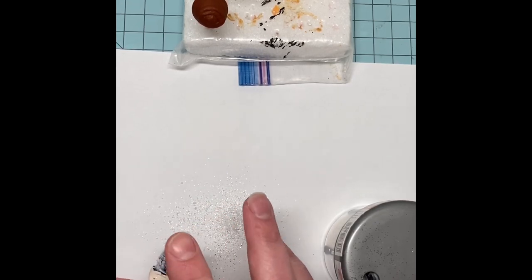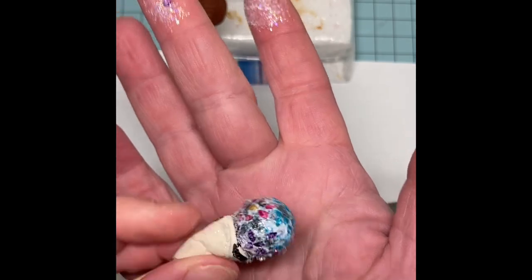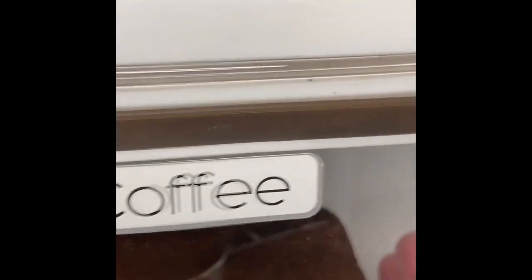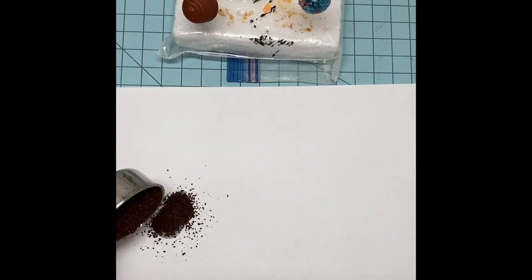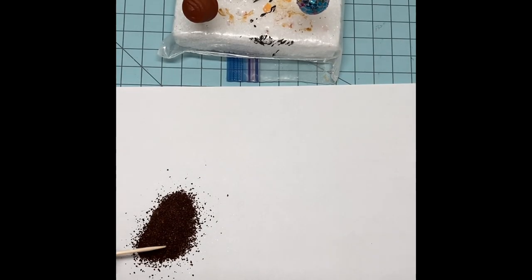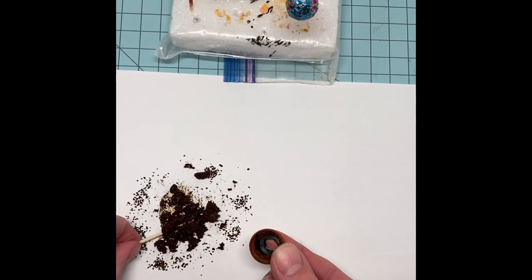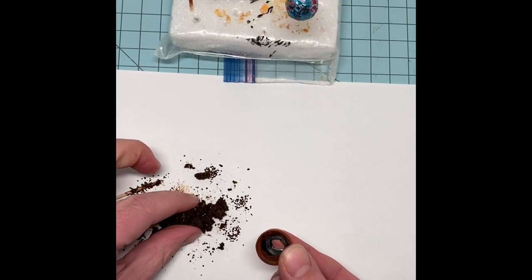Next, I took some matte mod podge and mixed it with some coffee to make fake dirt. Then I took my fake dirt and filled the head portion of the queen piece and the base portion of the queen piece with the mixture.